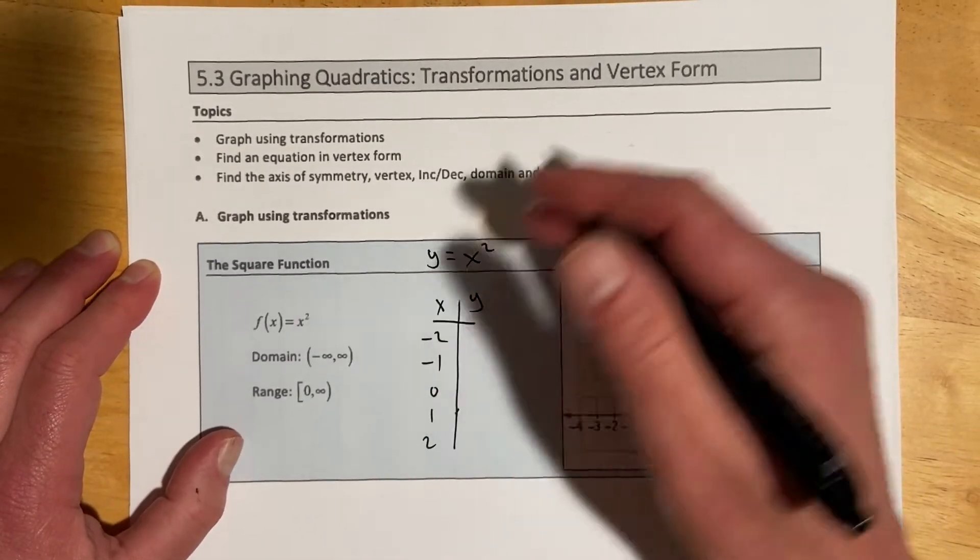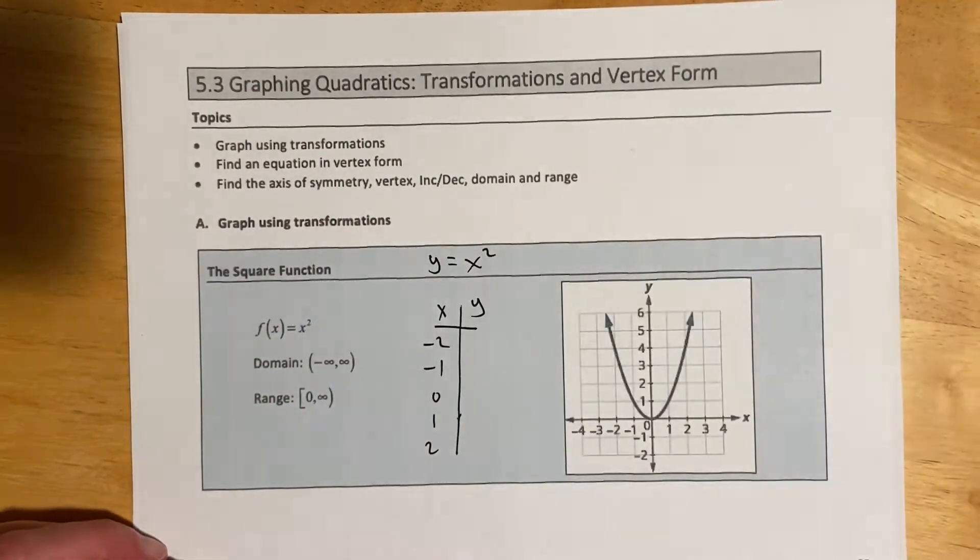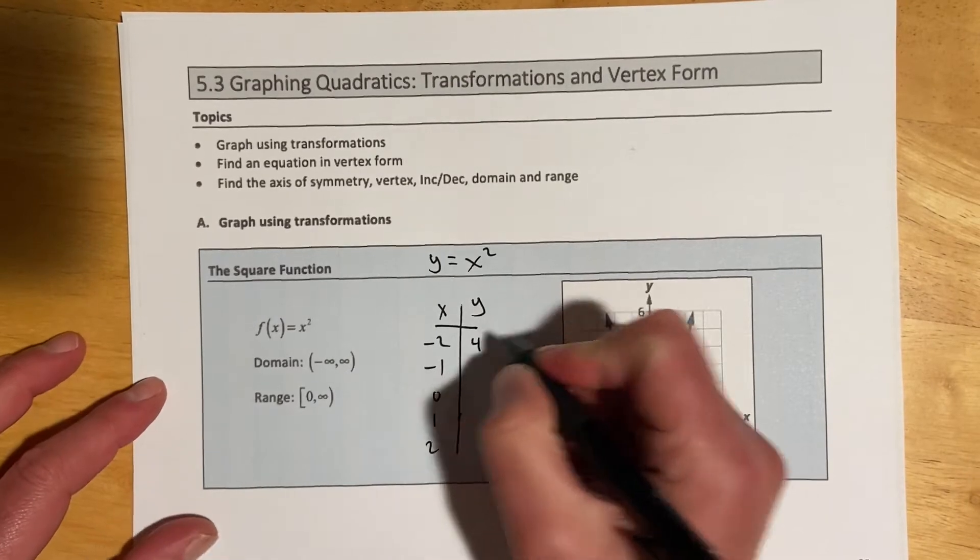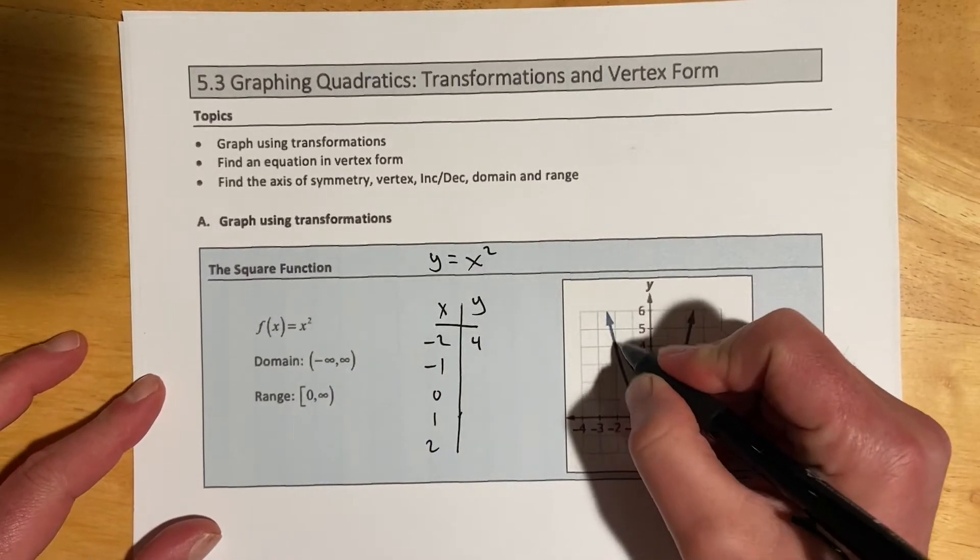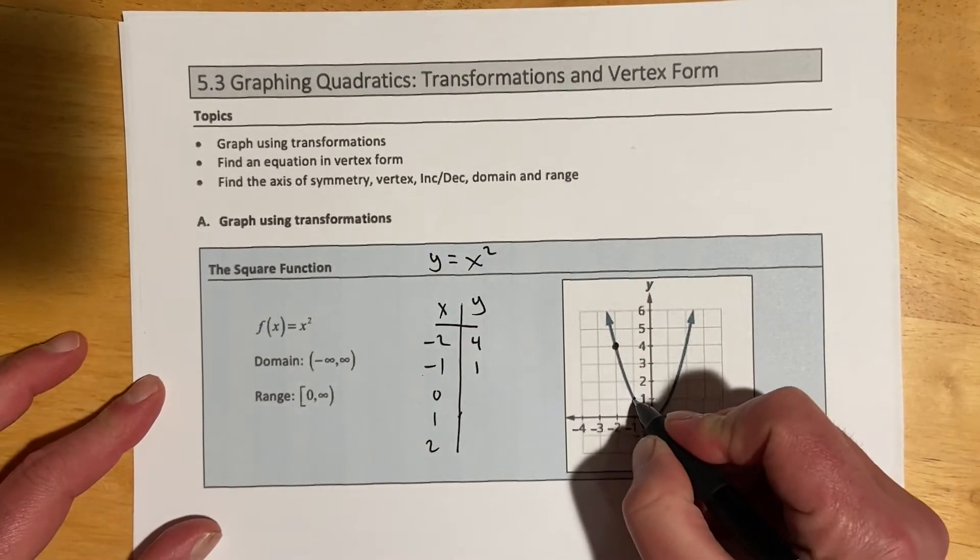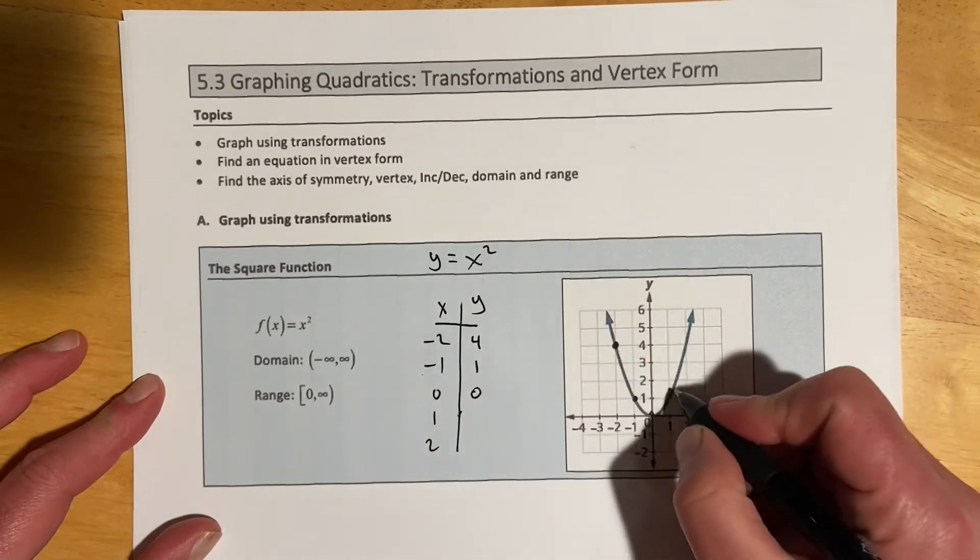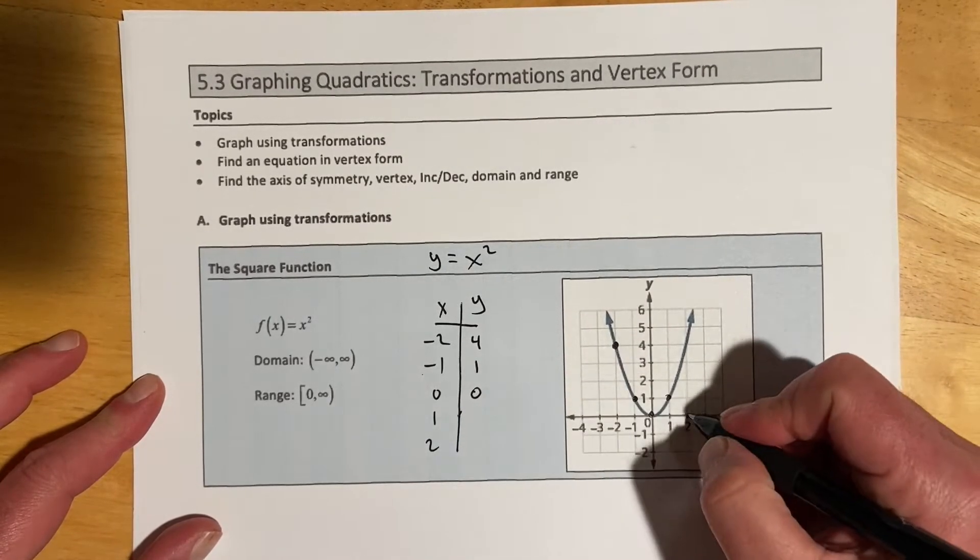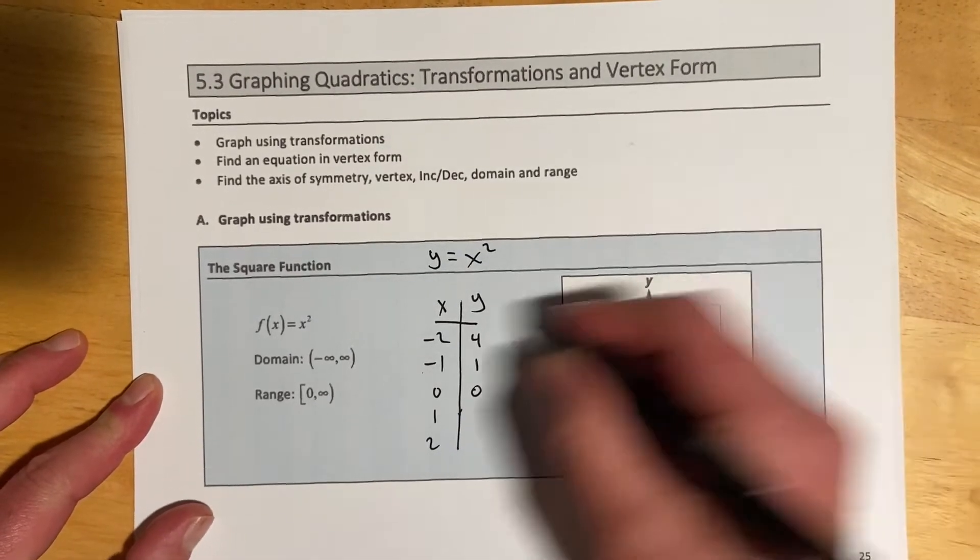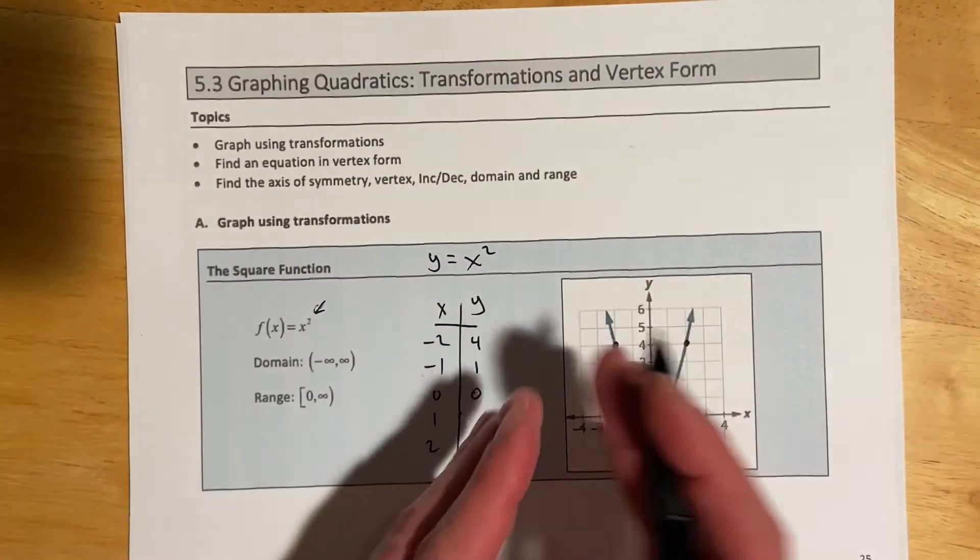Negative 2 squared, realize that that is a quantity squared, not negative 2 and then squared, so that's going to be a positive 4. Negative 1, quantity squared is 1. x is 0, y is 0, and then we're going to get matching points symmetric on the other side. And so x squared is an even function, it's an even power, and it has that y-axis symmetry.